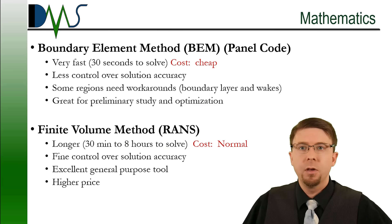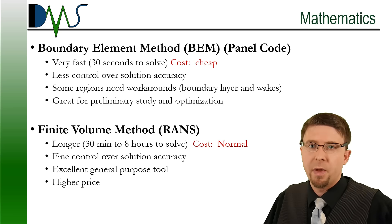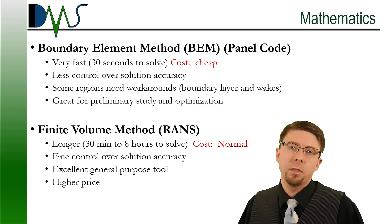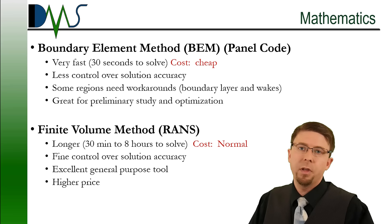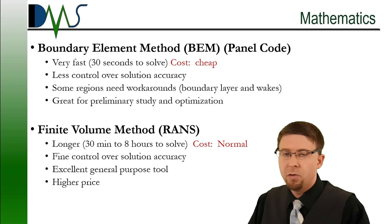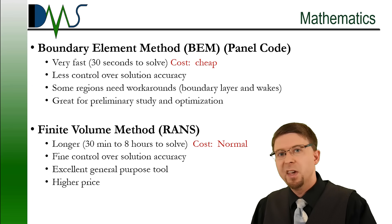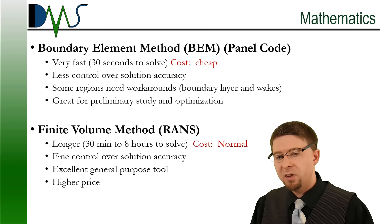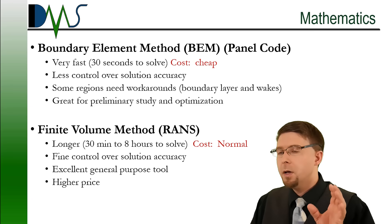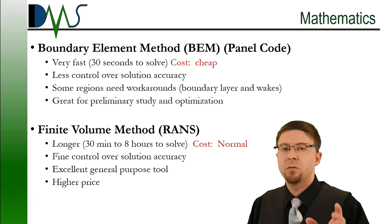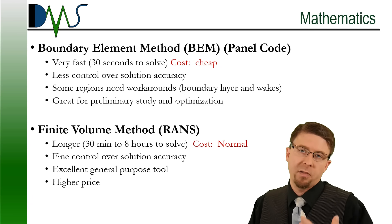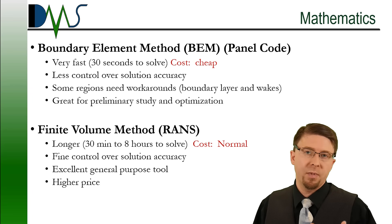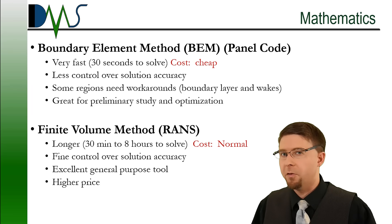First, let's talk about mathematics. You have two major options. The first is the boundary element method, also called panel codes. These are extremely fast — you can solve them in about 30 seconds, so the cost to run these programs is extremely cheap. They require potential flow theory, so you're completely disregarding viscosity, meaning there are sections of your problem you have to exclude from calculations. These were around in the 60s, 70s, and 80s, back before computers got powerful, and they involve a lot of approximations and assumptions. They're still very useful for preliminary studies or optimizations, but I wouldn't recommend them for final design options.